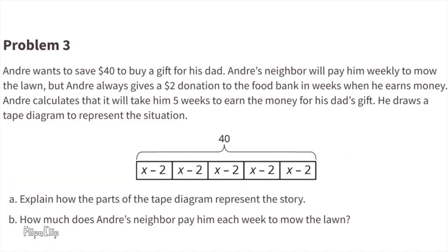Number three: Andre wants to save $40 to buy a gift for his dad. Andre's neighbor will pay him weekly to mow the lawn, but Andre always gives a $2 donation to the food bank in weeks when he earns money. Andre calculates that it will take him five weeks to earn the money for his dad's gift. He draws a tape diagram to represent the situation.